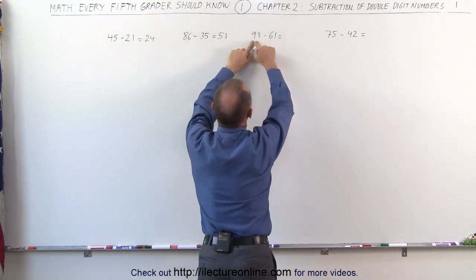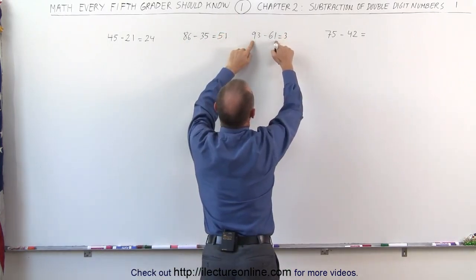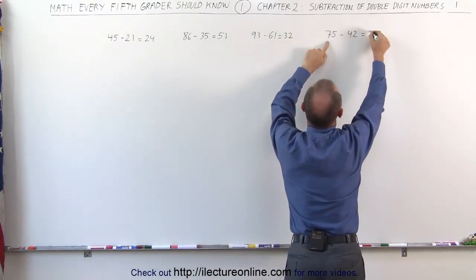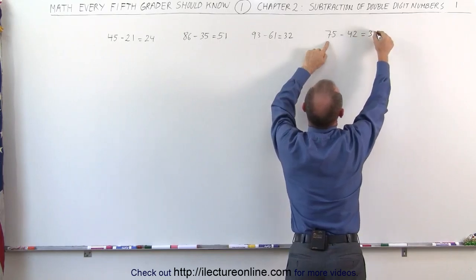Here we subtract the 6 from the 9, that gives us 3. Subtract the 1 from the 3, that gives us 2. Here we subtract 4 from 7, that gives us 3. 2 from 5, that gives us 3.